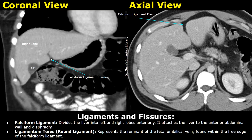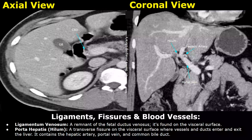Here we will get a better look at the ligaments and fissures of the liver. This hypodense dark line is the falciform ligament fissure, which divides the liver into right and left lobes. The ligamentum teres is a remnant of the fetal umbilical vein; it is found at the free end of the falciform ligament, but in a CT image it is not really visualized well. The ligamentum venosum is a remnant of the fetal ductus venosus; it is found at the inferior visceral surface, but in a CT image it is also difficult to see.